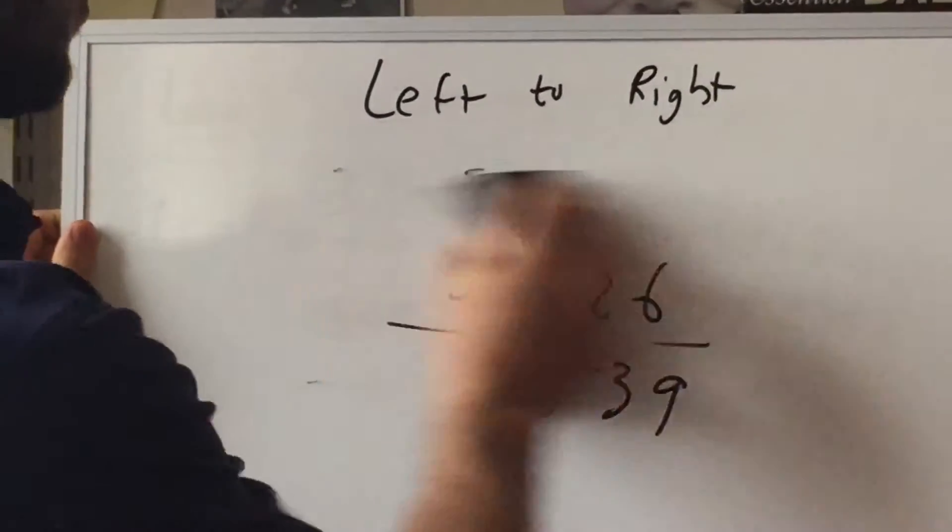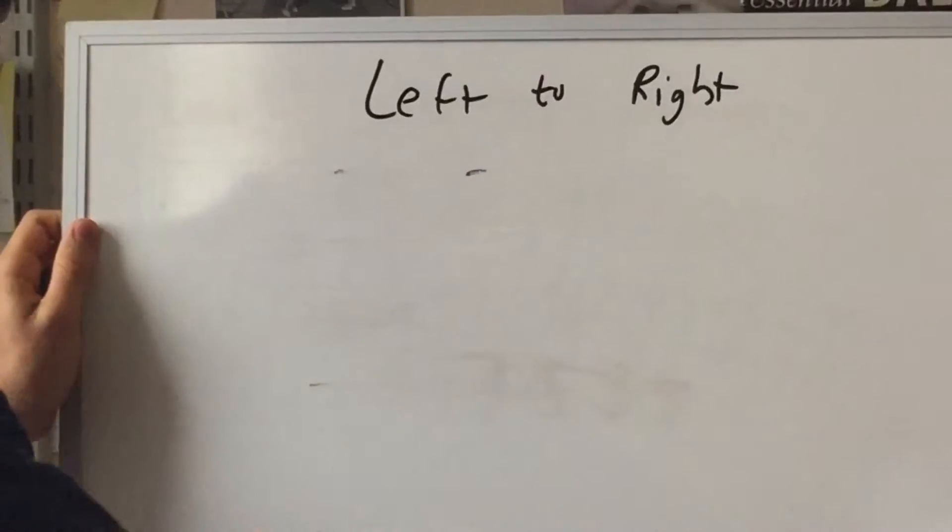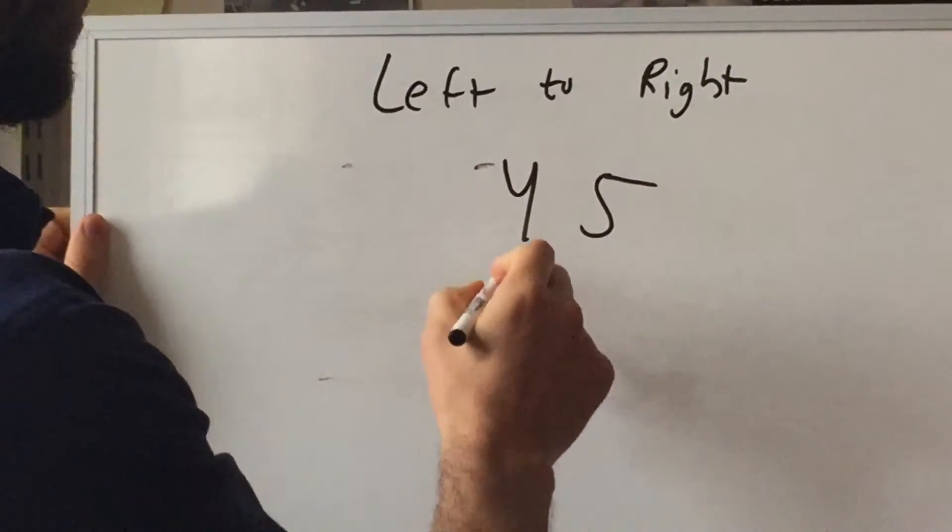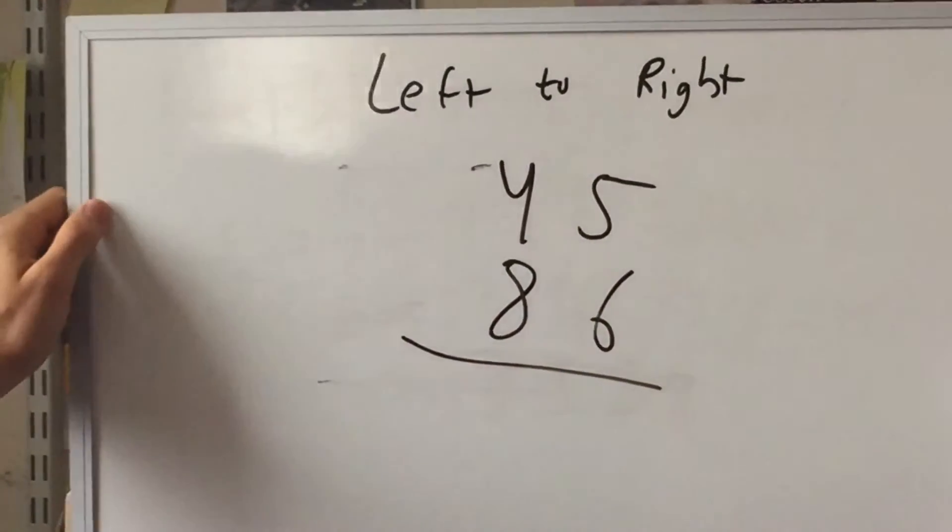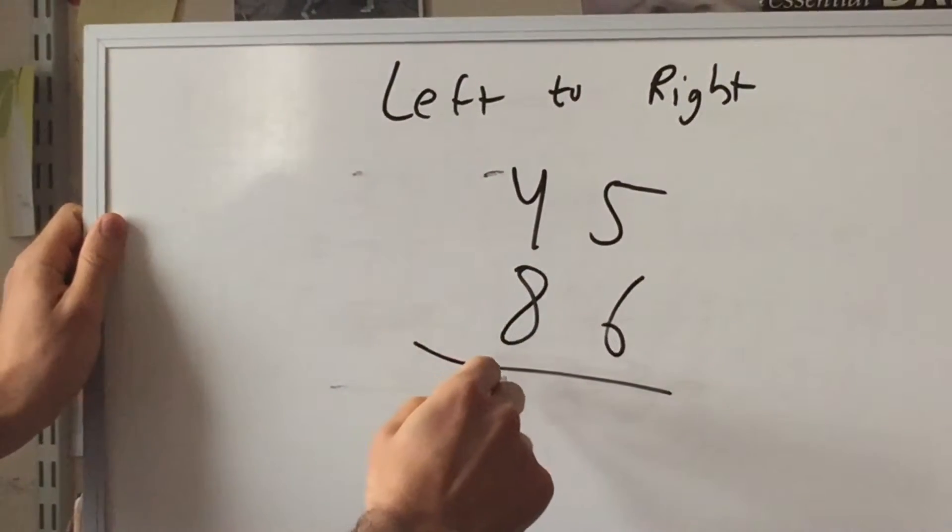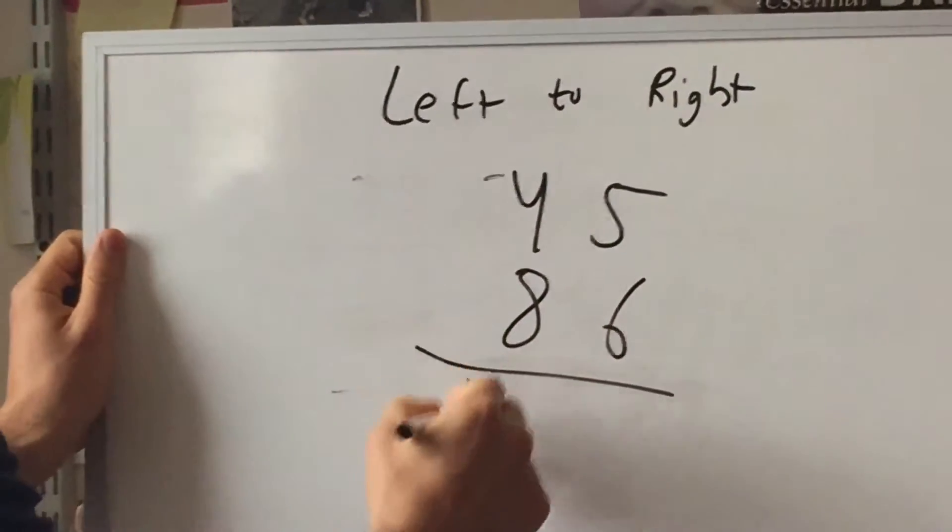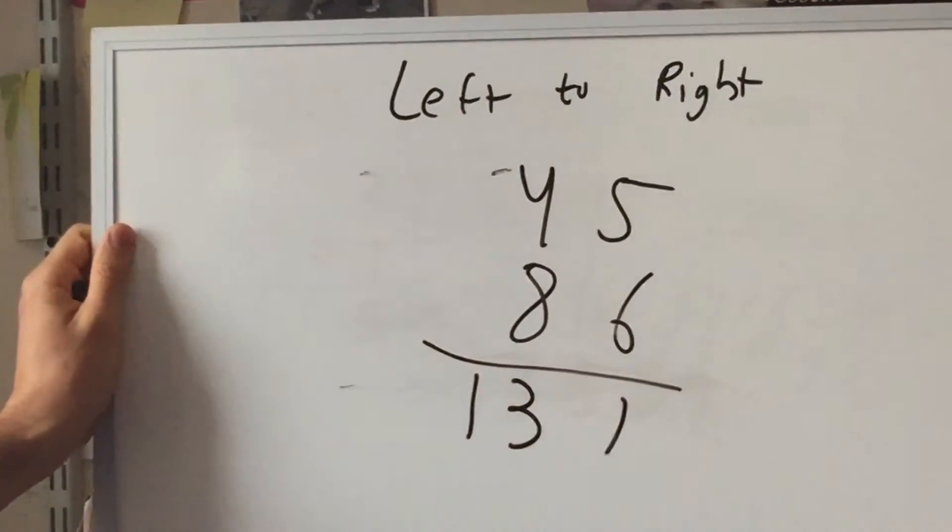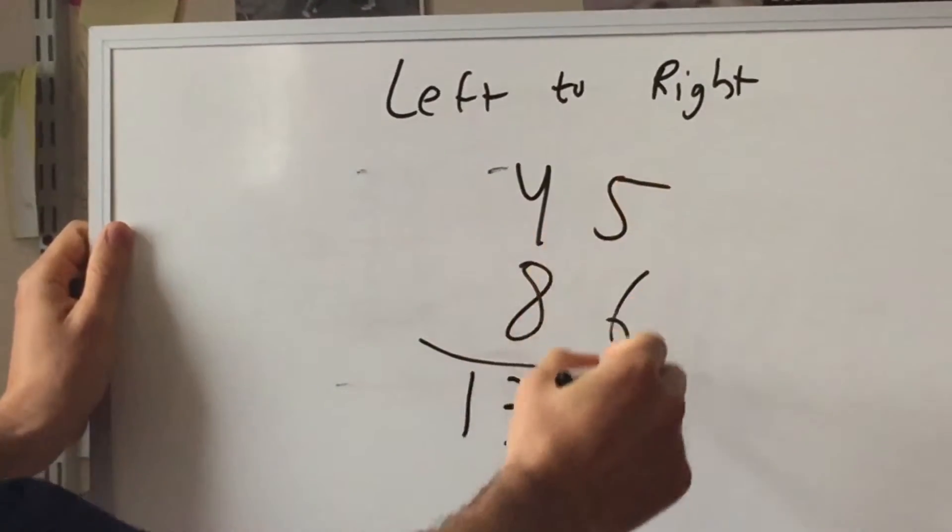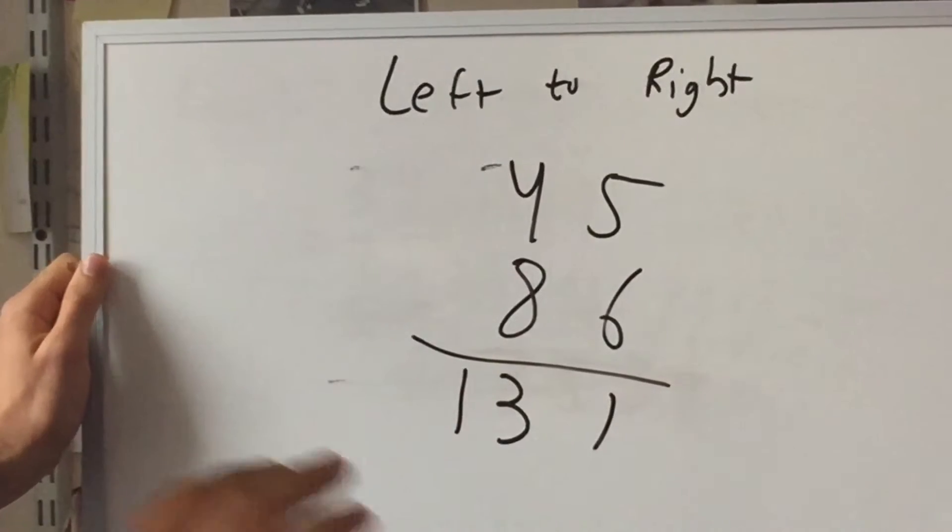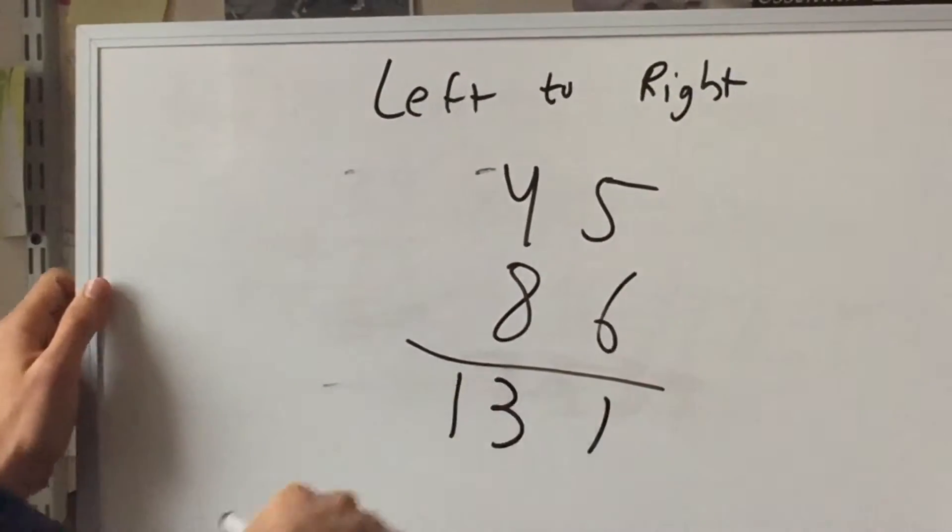All right, now let's take a few more examples. Things don't always go this smoothly. So let's say we have forty five and eighty six. You might say a hundred and twenty but we have to look ahead, there's going to be some carryover so it's a hundred thirty one. Now if you were doing this as a one carrying over, you could do it in your head but you'd have quite a bit of difficulty.